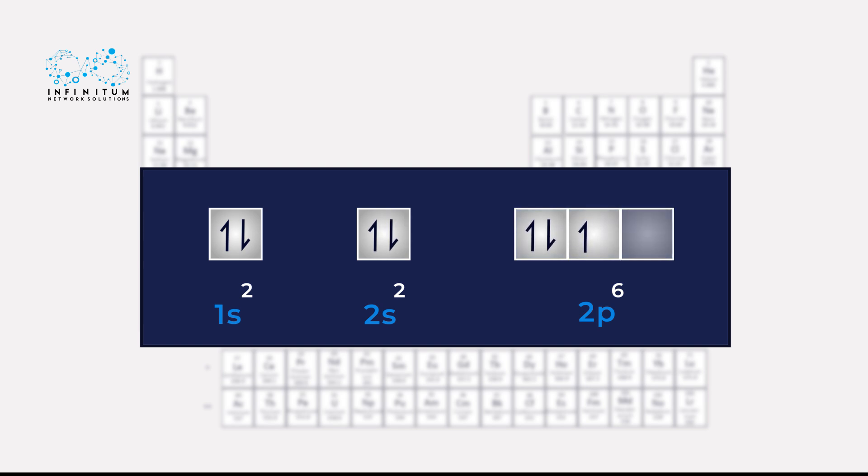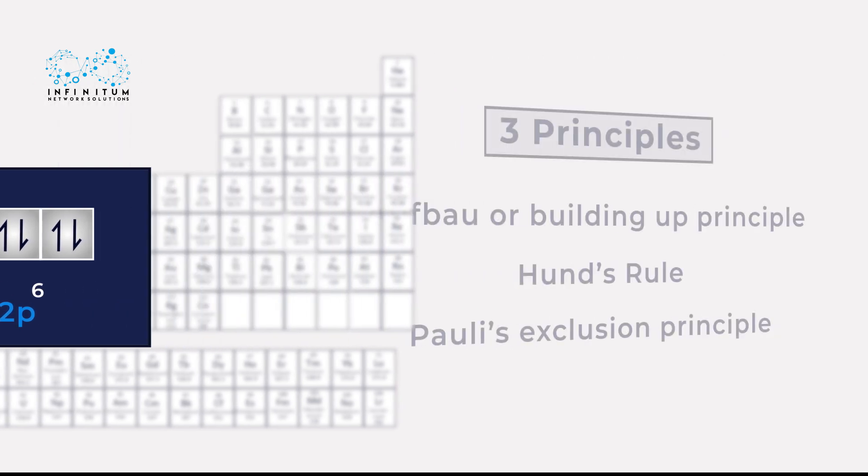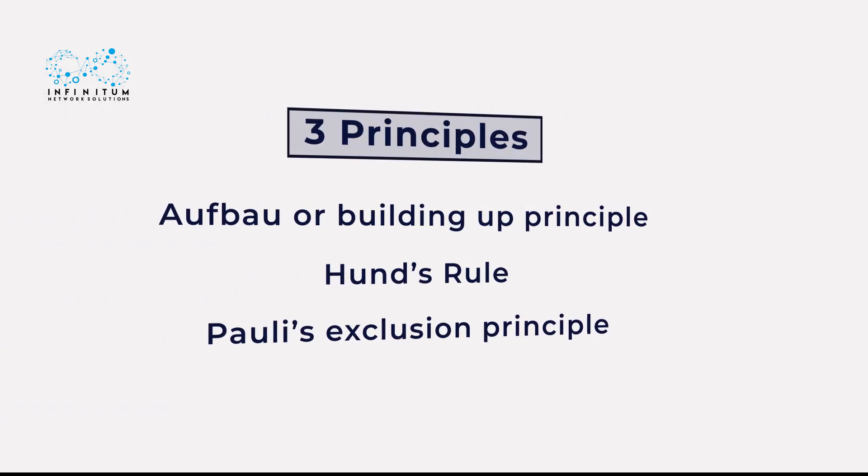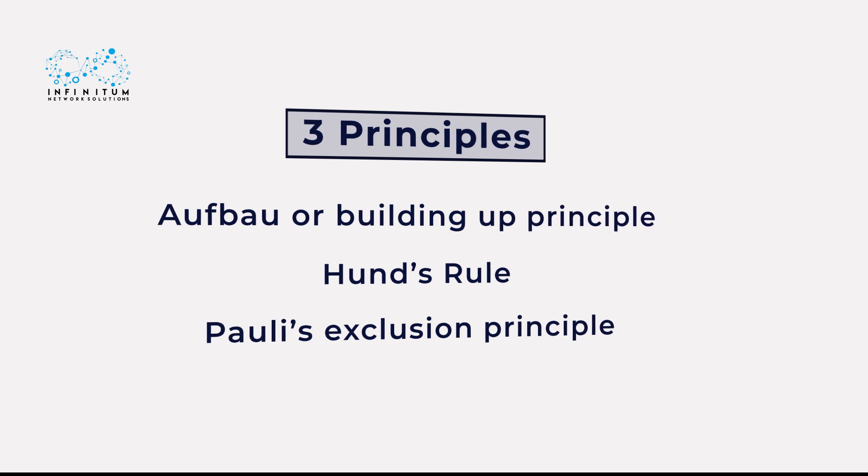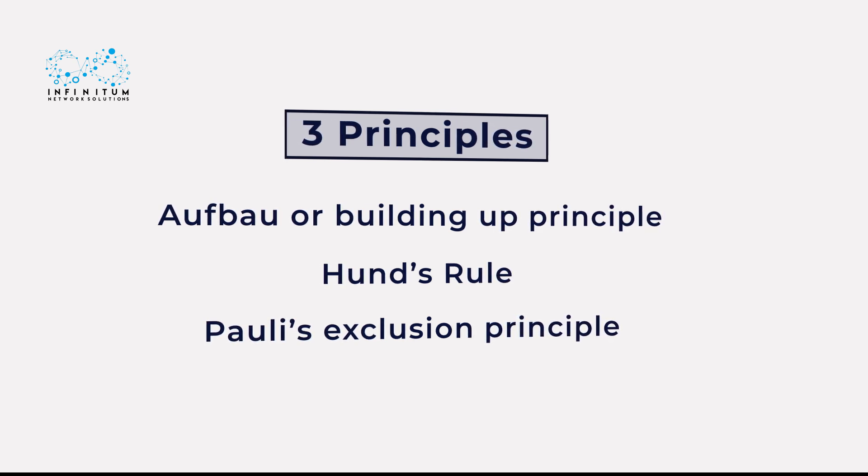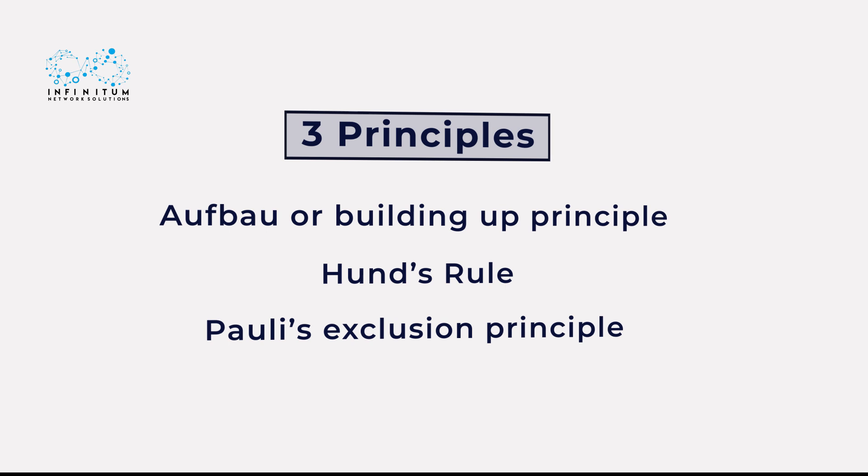The order in which these electrons are filled into the atomic orbitals are controlled by three crucial guidelines or principles which include the Aufbau or Building Up Principle, Hund's Rule, and Pauli's Exclusion Principle.